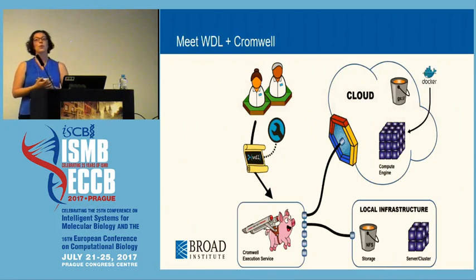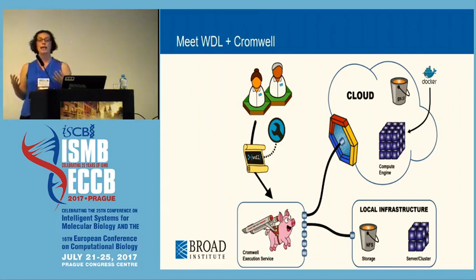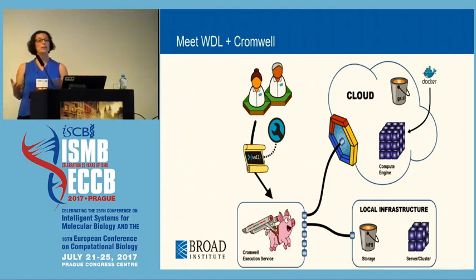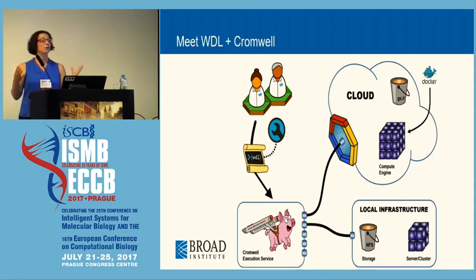At the Broad Institute, we do a lot of our own sequencing — and that's an understatement. We sequence about 24 terabytes of data every day, and that's only going up. So we needed to create software that is also scaling as we scale out our data. We have Cromwell, which is robust and works with different clouds — we currently support Google Cloud and are building support for Alibaba and Amazon. We also have WDL, which allows researchers to write their pipelines in a language they easily understand and run them on whatever cloud they want.